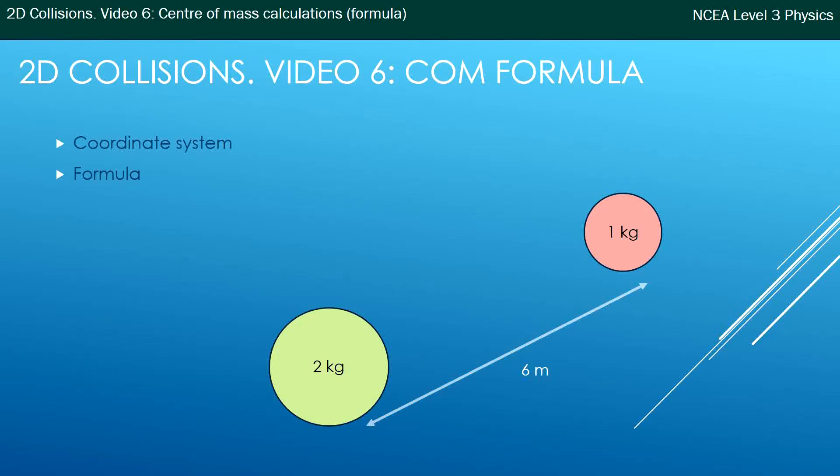Hello, this is Mr. McGovern in the sixth video in the series on two-dimensional collisions. In the last video, video 5, we looked at calculating where the center of mass is of a system using the ratio method.